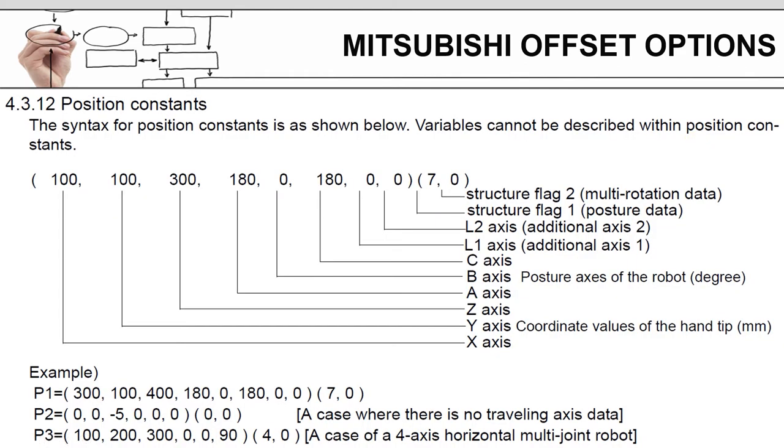When defining your offset with the Mitsubishi controller, you need to treat it as a position. And so when you declare your variable, as you can see on the screen here, you are going to need to give it X, Y, Z axis information for the offset. And then you will also need to give it A, B, and C axis information, which is getting back to roll, pitch, and yaw. You also have to tell it whether or not there's any offset for any additional axes that have been defined. And you may or may not need to use the structure flags.